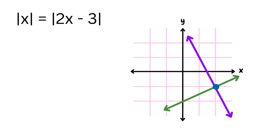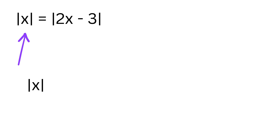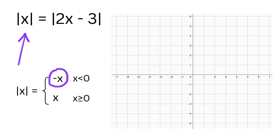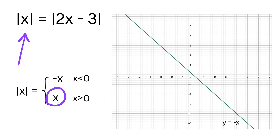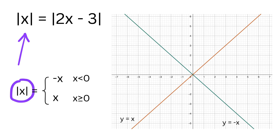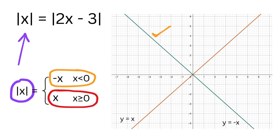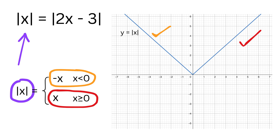Now let me show you how we can solve the same equation graphically. For the left-hand side, the absolute value of x can be written as minus x when x is less than zero, and x when x is greater than or equal to zero. The graph of y equals minus x slopes downward, and the graph of y equals x slopes upward. Combining these pieces for the appropriate regions gives us the V-shaped curve for y equals the absolute value of x.